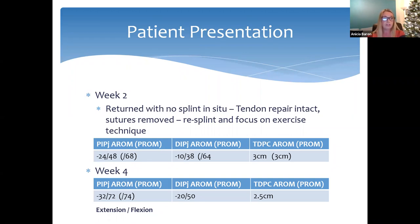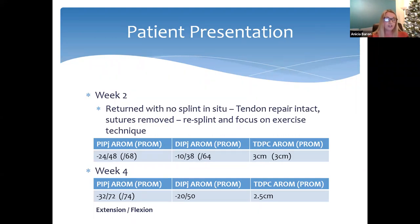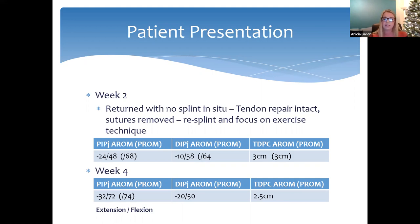Range of movement in the slides is shown as extension over flexion. At two weeks, the patient had removed his splint himself, but fortunately the tendon repair remained intact. At week four, flexion was improving, but he was already starting to develop a fixed flexion deformity at the PIP joint — not uncommon with flexor tendon repairs. His scar was thick and tethered, so treatment focused on scar management. A dorsal extension splint was provided to wear between exercises to address the flexion contracture, with light function permitted from week five.